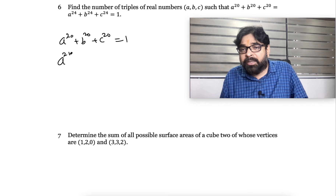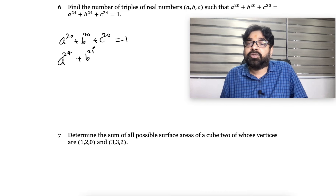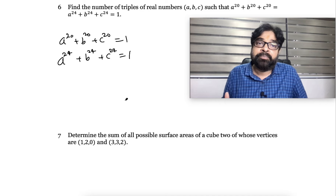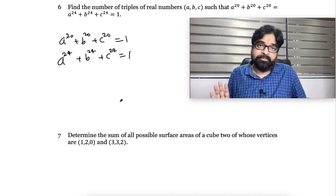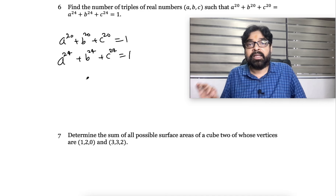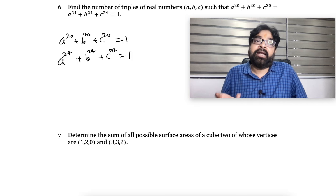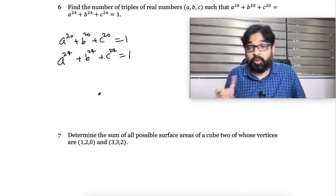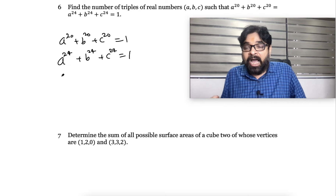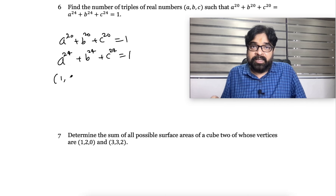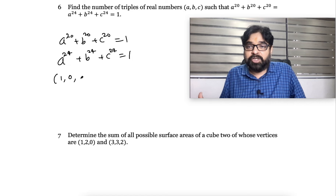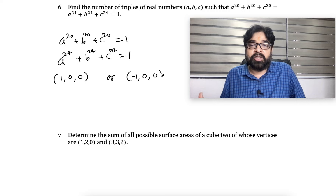But they are saying: if you increase the power, there is no effect — the same thing happens, it remains 1 only. So there is only one possibility. What is the possibility? One of them should be 1 and the others should be 0. So the possibilities are: A equals 1, B equals 0, C equals 0; or A equals minus 1, B equals 0, C equals 0.